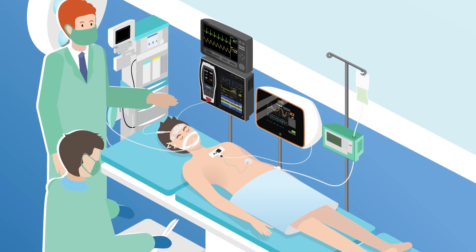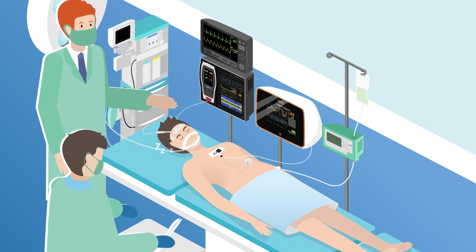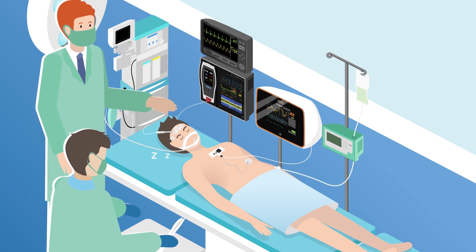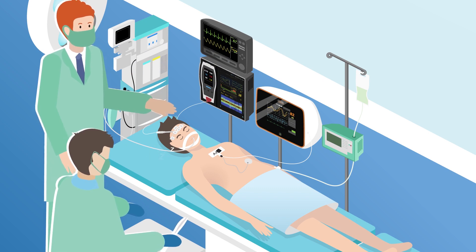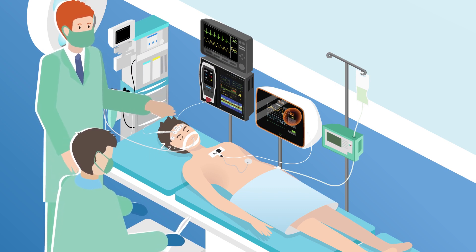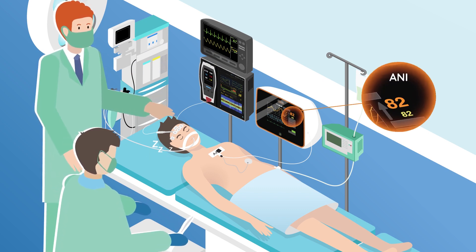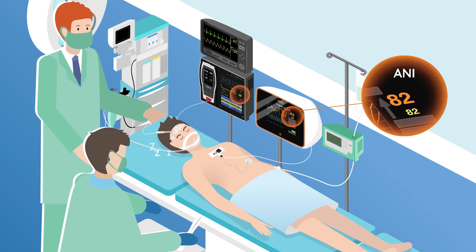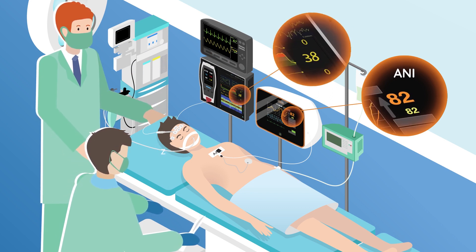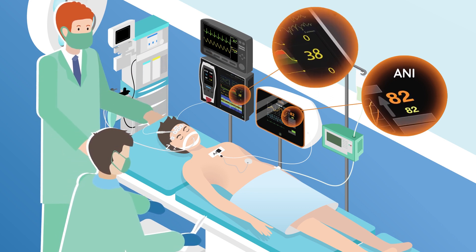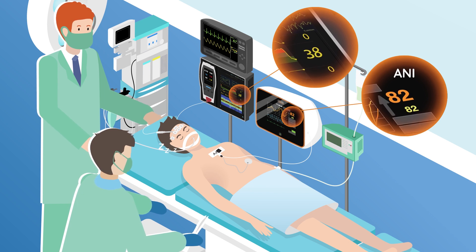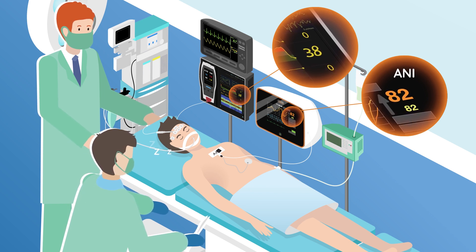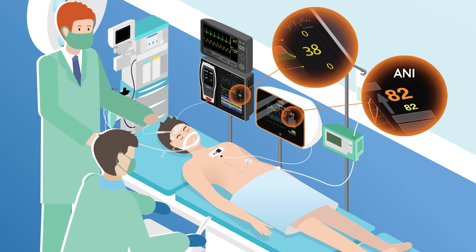During anesthesia and without surgical stimulation, the ANI shows a percentage of the parasympathetic activity in the patient as 82, indicating the patient is comfortable and unconscious. Shown here is a PSI value of 38.